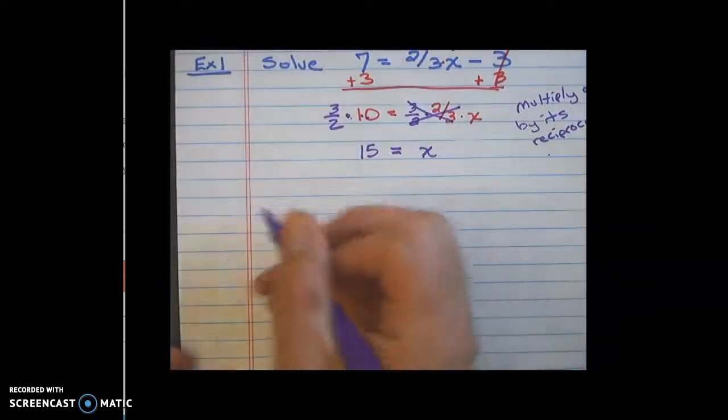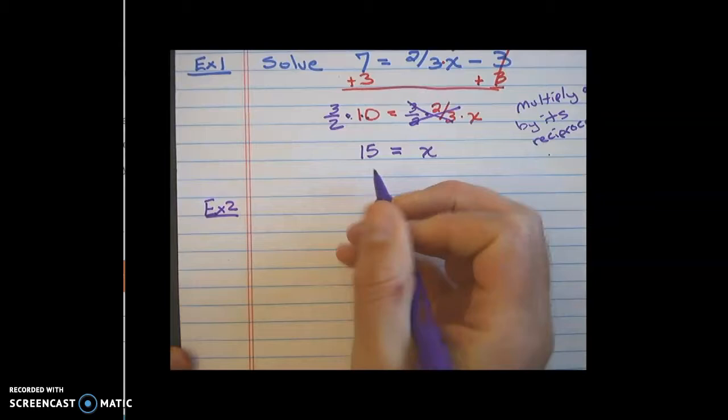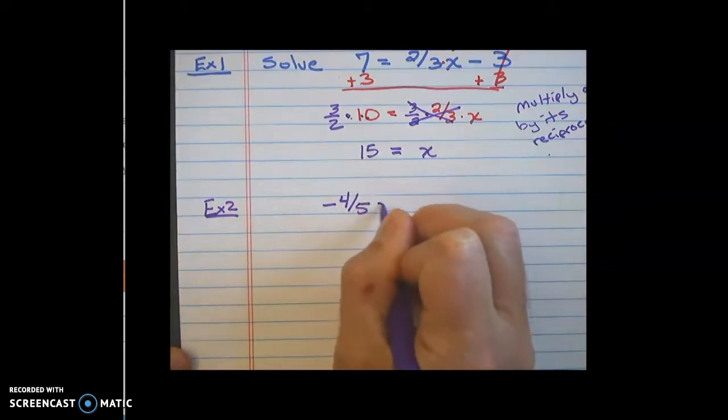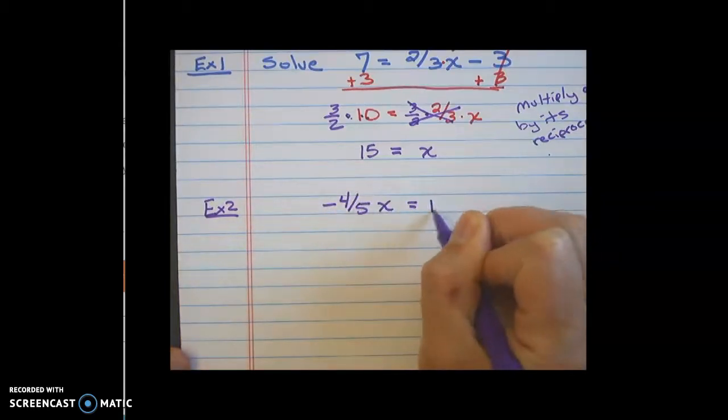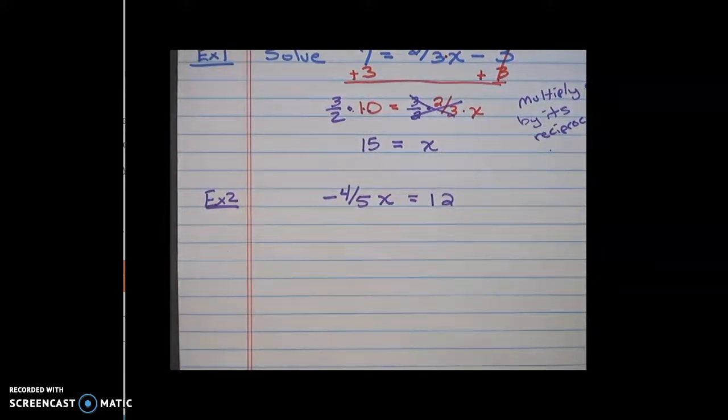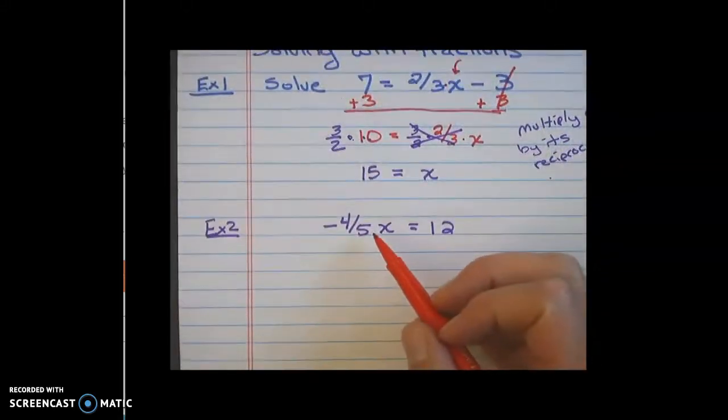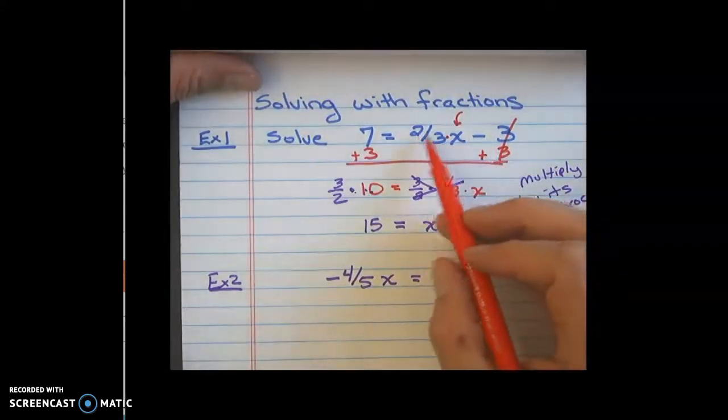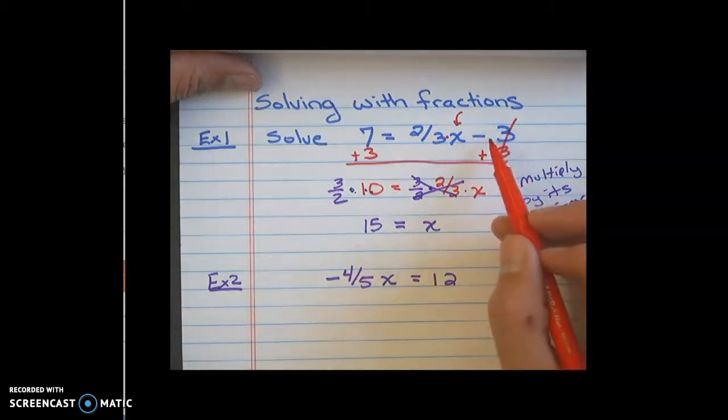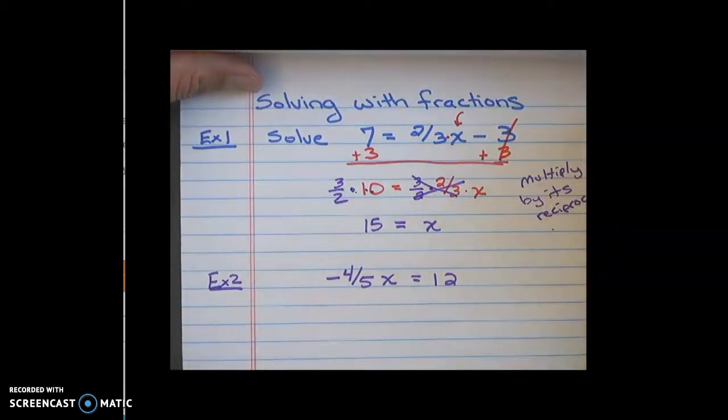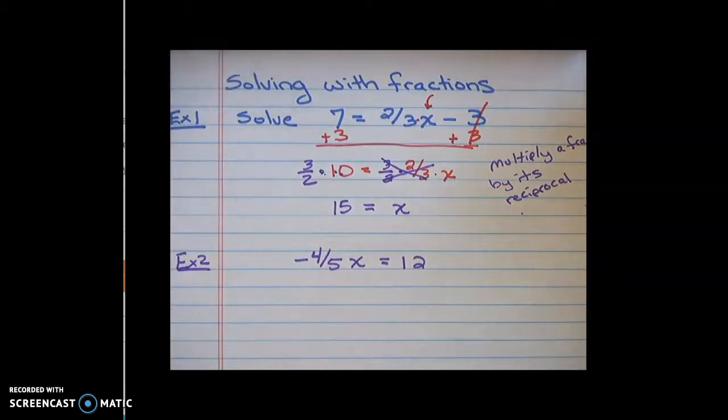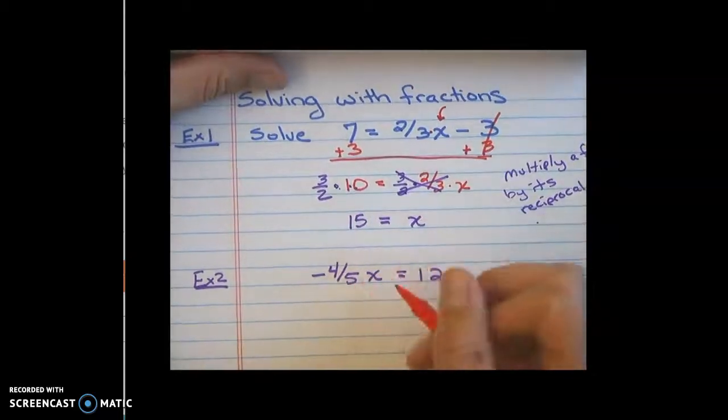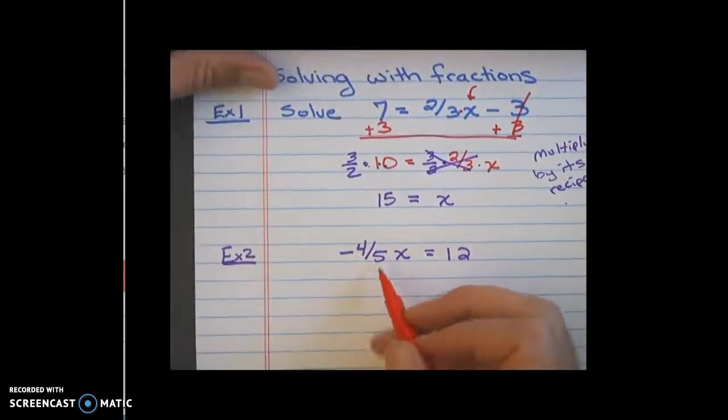And it even works with real simple one-step problems. So if I had something like negative 4/5 x equals 12, I could solve that fairly quickly just by multiplying by the reciprocal. Now I'm only going to multiply by the reciprocal when the fraction is the farthest thing away. So I didn't multiply by the reciprocal here because I still had to get rid of the minus 3. So we don't always multiply by the reciprocal or the flip first. We do it when it's its normal time to get rid of it in the solving process. So here I would multiply by the reciprocal of negative 4/5.